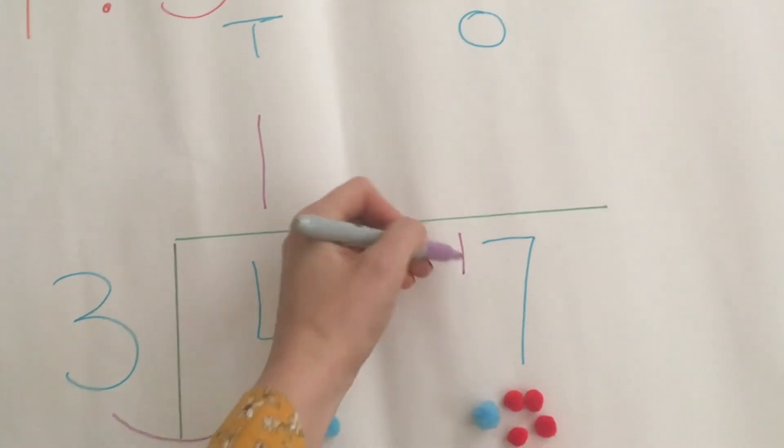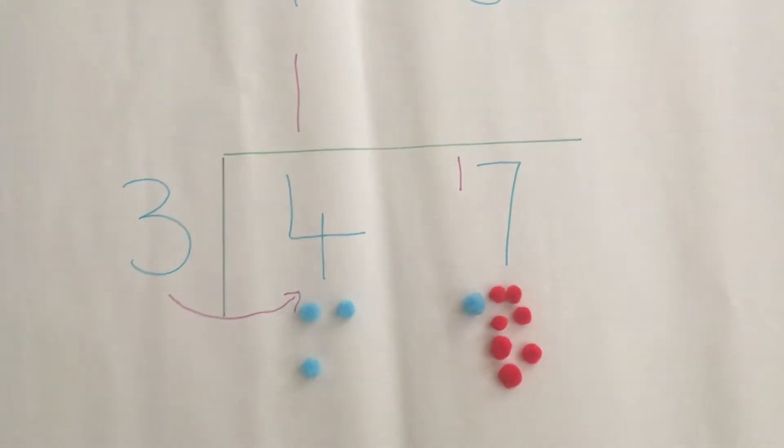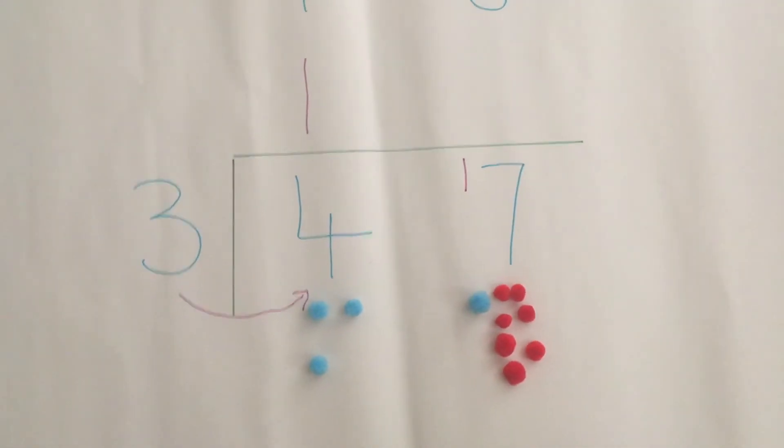So I put the 10 in front of the 7 and this makes it 17 because I have 1 ten and 7 ones. So that is 17.